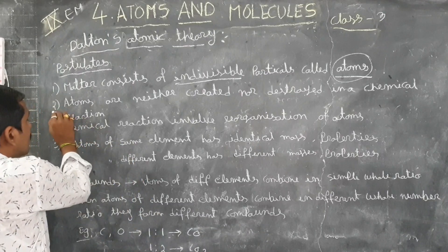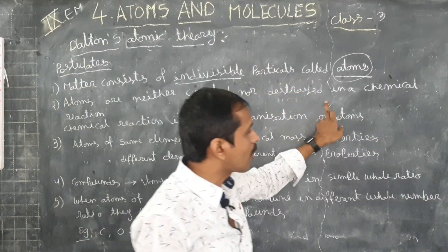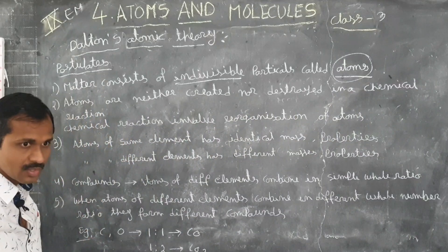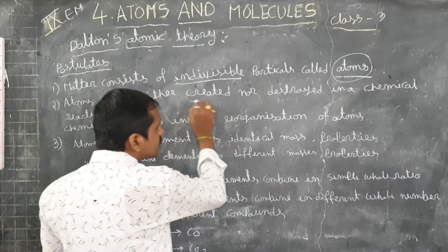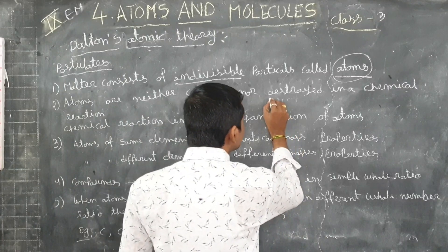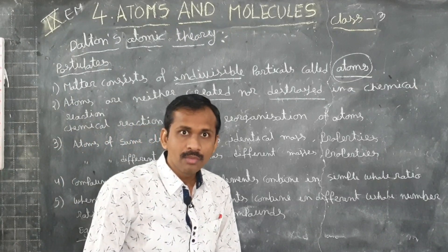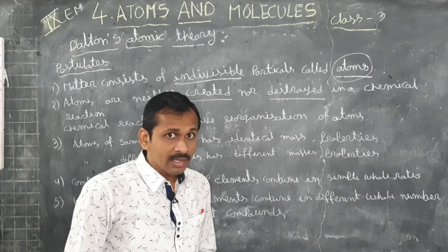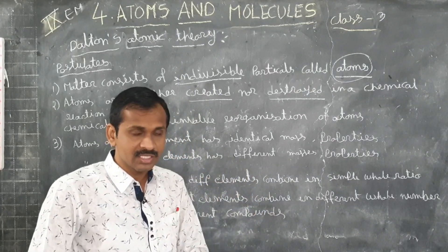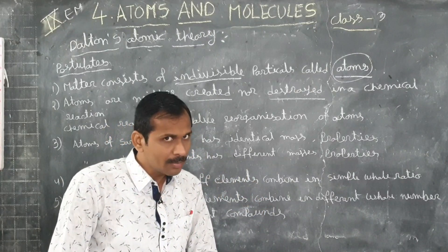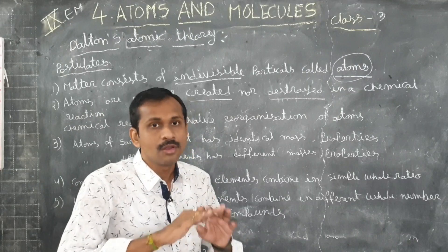The second point of Dalton's Atomic Theory is: atoms are neither created nor destroyed in a chemical reaction. In one chemical reaction, the number of atoms in the reactants before the reaction and the number of atoms in the products after the reaction remain the same. The atoms are neither created nor destroyed.